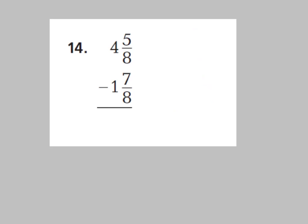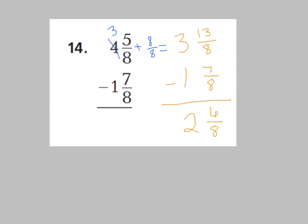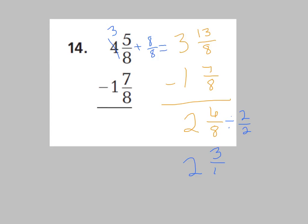Number 14: 4 and 5 eighths minus 1 and 7 eighths. Try this on your own, press pause, then press play for the answer. We had to rename 4 and 5 eighths — take away a whole from the 4, leaving 3 wholes, and give that whole to the 5 eighths: 5 eighths plus 8 eighths is 13 eighths. So 3 and 13 eighths minus 1 and 7 eighths: 13 minus 7 is 6 eighths, and 3 minus 1 is 2 wholes. That gives 2 and 6 eighths. Divide by 2 to simplify: 2 and 3 fourths.